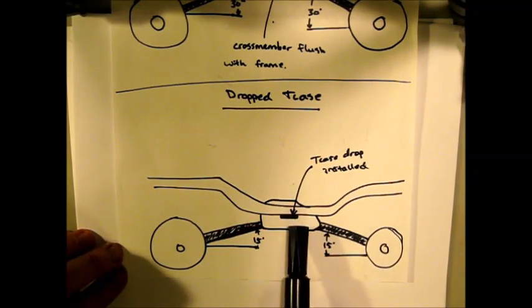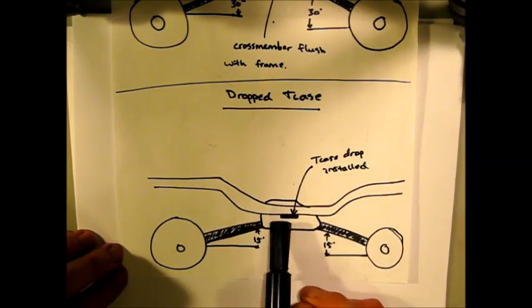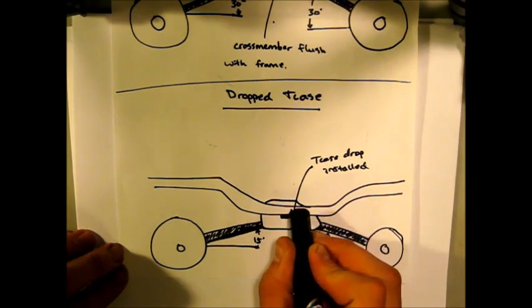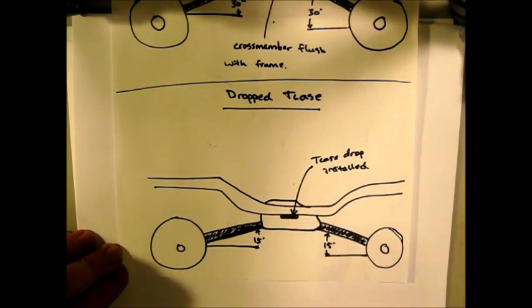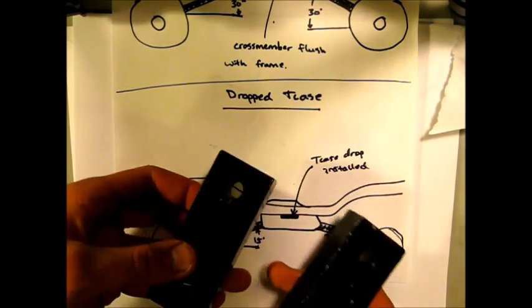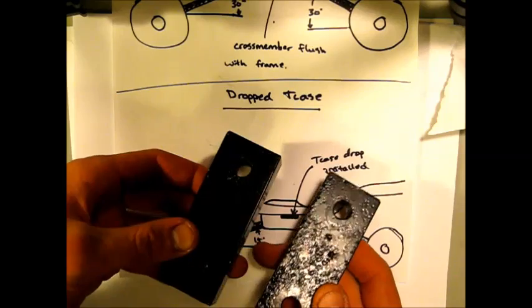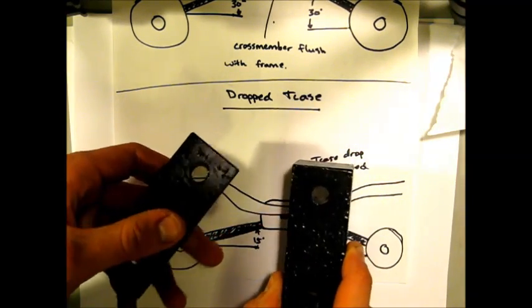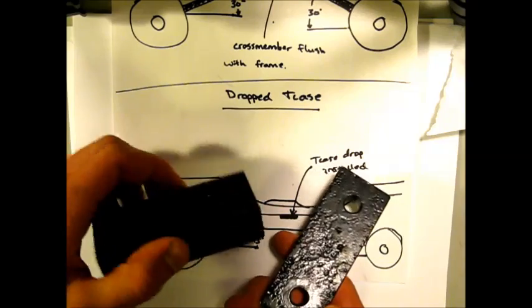and what you would do here is you would put this in between the cross member that supports the transfer case and the frame. And that's going to lower the transfer case by that amount. And these right here, this is for a ZJ, which would be a 93 to 98 Grand Cherokee. This is a 1-inch drop, and these came off of my previous Jeep.